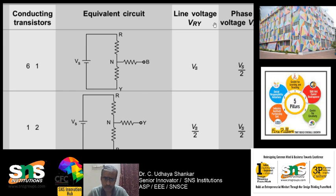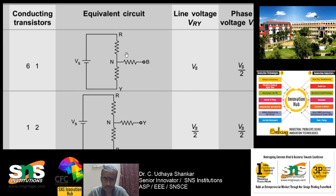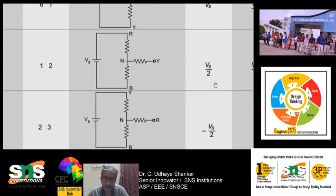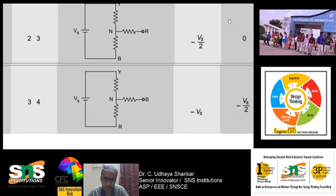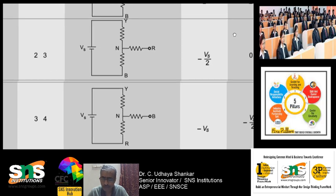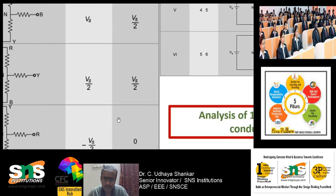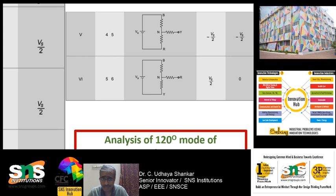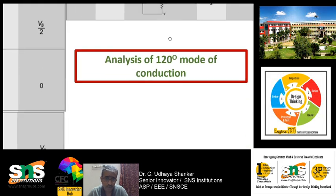Each switching sequence has its own equivalent circuit. When transistors 6 and 1 are conducting, by applying Kirchhoff's voltage law the line voltage across R and Y will be V_S. The phase voltage V_RN will be V_S/2. In the second interval it is again V_S/2, in the third interval it is −V_S/2 and 0, and in the fourth interval it is −V_S and −V_S/2. This is simpler to analyze compared to 180-degree mode because only two transistors are on and one phase is always open-circuited.